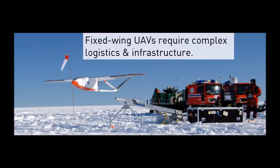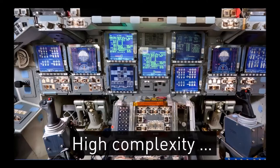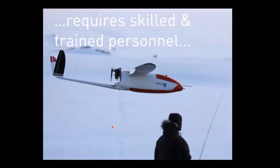That sums up the disadvantages of fixed-wing UAVs: they really require complex logistics and infrastructure. You need a big catapult to launch and some kind of area to safely land. Flying these things is also not easy — there are a lot of different controls, the aircraft behaves somewhat unusually, and you need to build experience. These require trained pilots who have been flying for several years, typically two pilots flying together.